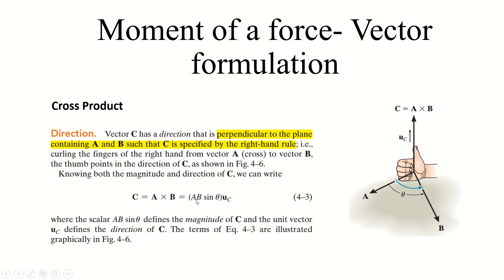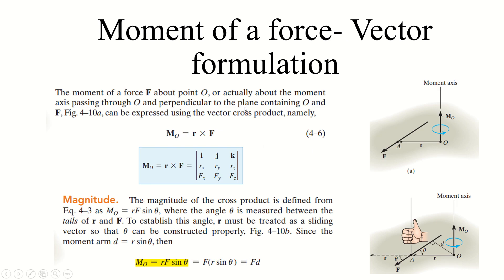So to summarize the cross product: its magnitude is found by AB sinθ and its direction is found by using the right-hand rule. Now we come back to our original topic — how to find the moment of a force using vector formulation. The moment of a force is found by the cross product of two vectors, r vector and F vector. This is an important formula that will be used in the upcoming examples.